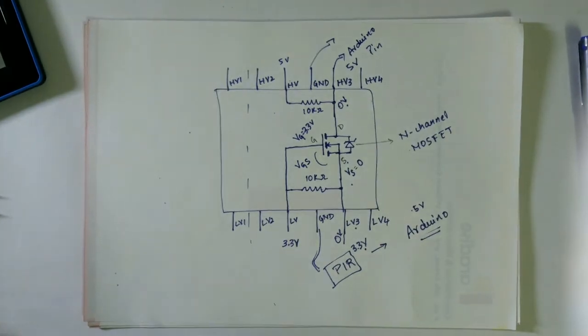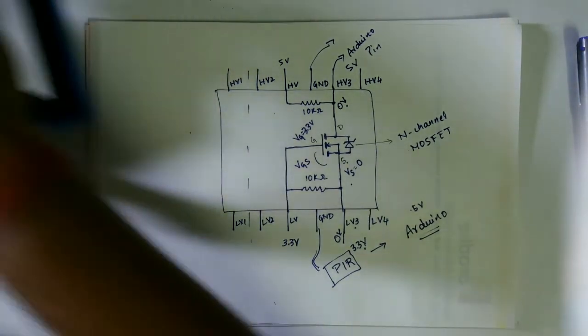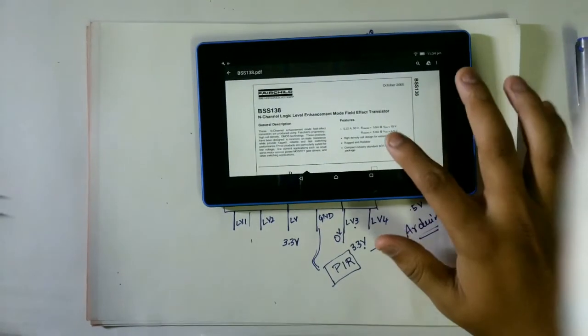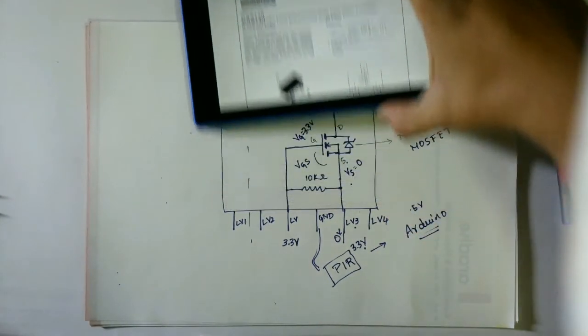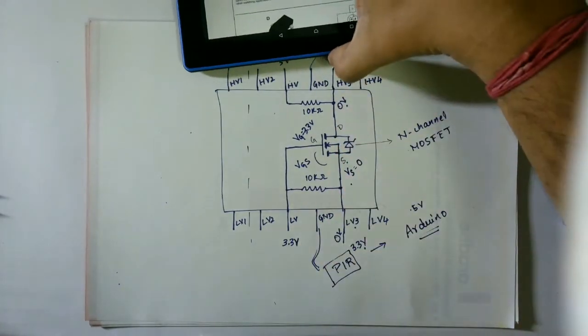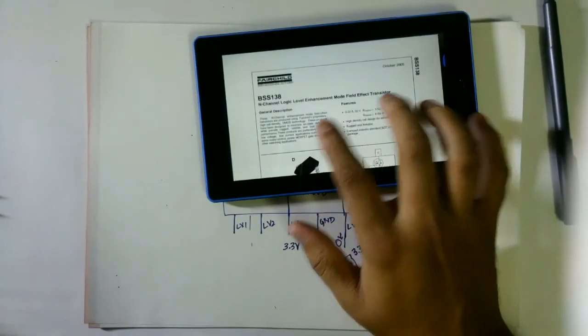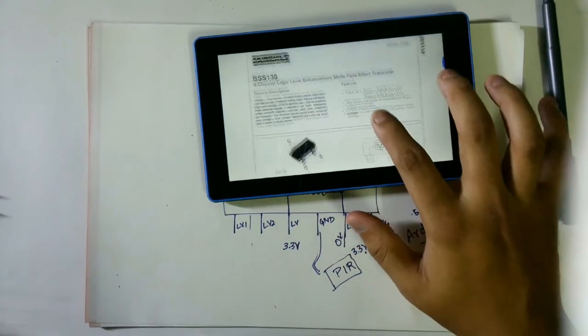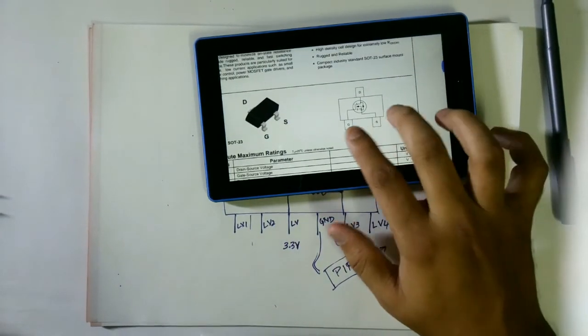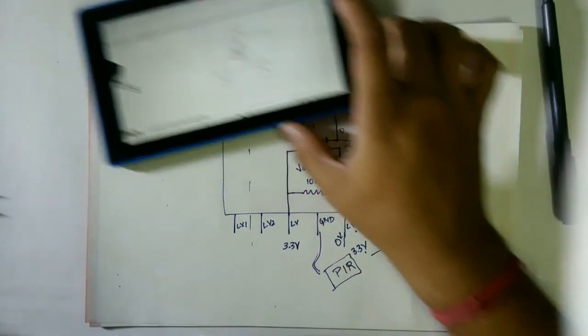So if you want to learn more about it, I have a document here as you can see. This is BSS138 IC which we have used here. So this is the N-channel logic level enhancement mode field effect transistor.